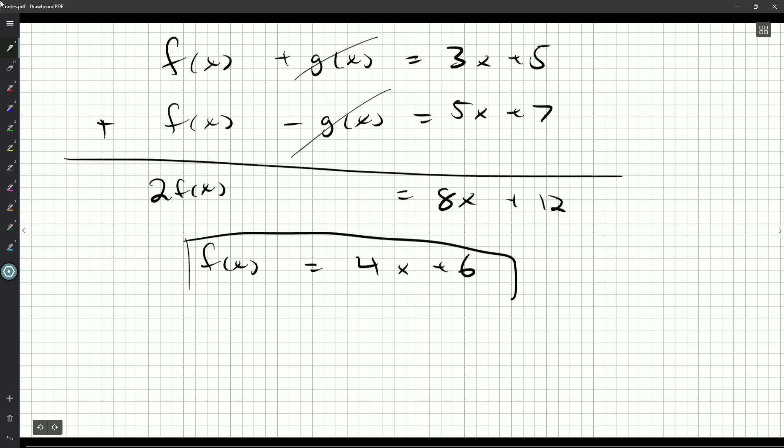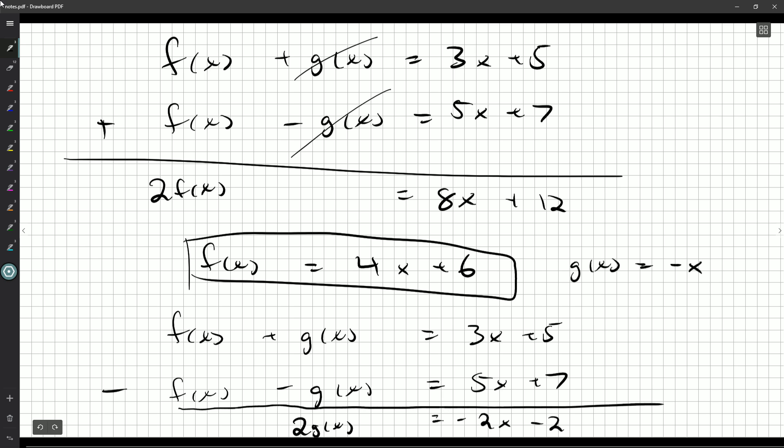Great! So now I could take this, plug it back in, and figure out G of X. Or we could do the same sort of trick, but instead of adding, we could subtract, and we can find G of X. So now when we subtract, we'll get no F of X's. G of X minus negative G of X will be 2 G of X's. We can squeeze that in at the bottom there. And then 3X minus 5X is negative 2X, 5 minus 7, negative 2. Divide by 2 on both sides, and we can see G is negative X minus 1.